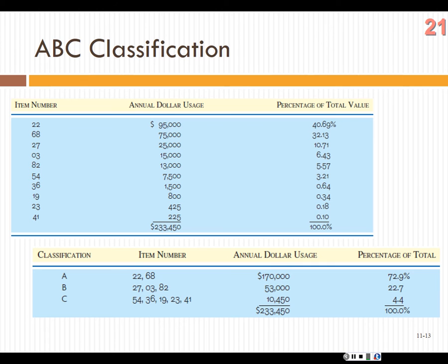In practice, A items are counted once a week to ensure accuracy — discrepancies require reconciliation and are a big deal. B items might be counted once a month — important but not as critical. C items maybe once a quarter. You code every part number in your inventory system as A, B, or C. The MRP system automatically generates a daily cycle count list for stock keepers without showing them the current quantity, so they have to actually count and then reconcile against the system.